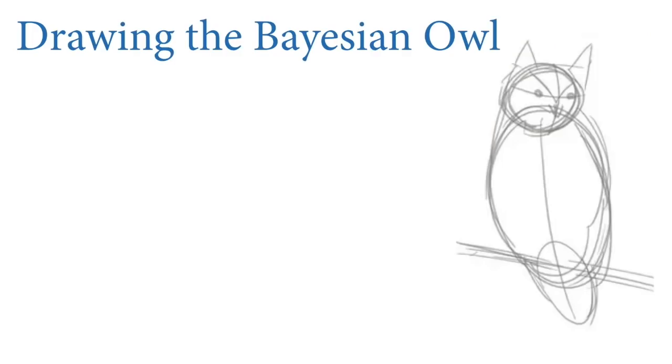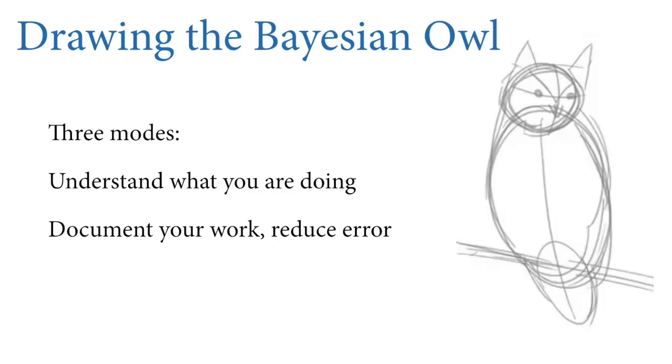Why do I want you to draw the owl? There are three modes. First, to help you understand what you're doing, so you're not trusting somebody else's canned procedure, the black box of the little golem. Second, there are selfish incentives. If you document your work, future you will thank you because errors will be avoided and you can reuse your work in careful ways. Point and click interfaces leave no trail of breadcrumbs.